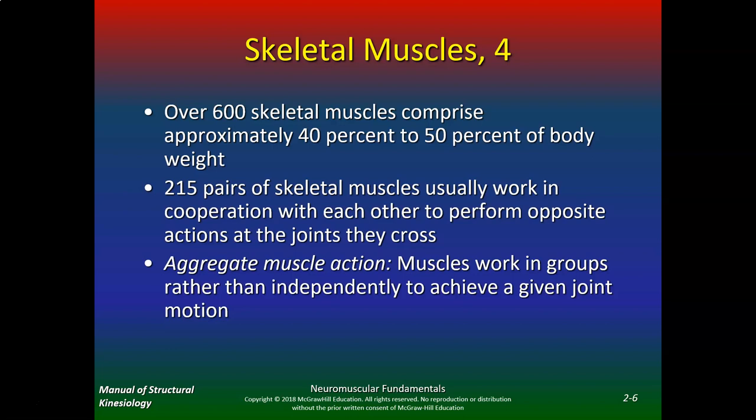That means muscles work in groups rather than independently to achieve a joint motion. When you work out, you hardly ever just do simple bicep curls or just straight hamstrings. If you just do exercises working your quads or just your hamstrings from a sports standpoint, that doesn't work — because your quads, hamstrings, glutes, popliteus, anterior tib, posterior tib, and calves all have to work together.